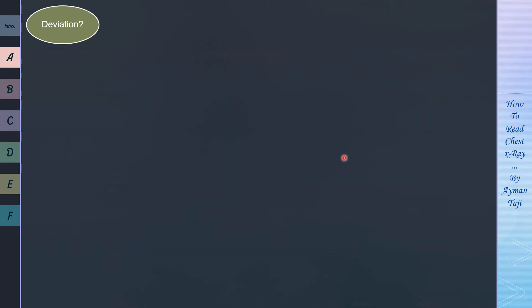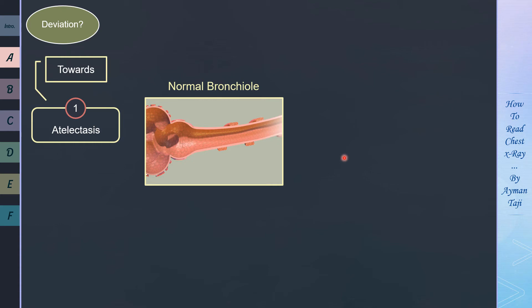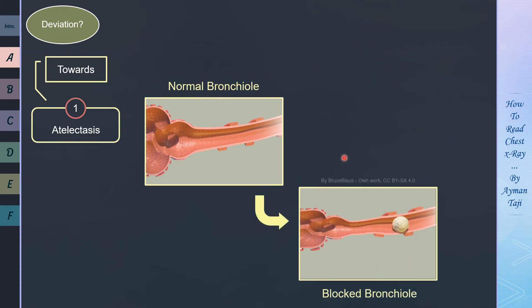On the other hand, some cases will lead to tracheal deviation towards the affected side, and there are many reasons. One of them is atelectasis, which is a loss of lung volume that is caused by a variety of ventilation disorders such as a tumor mass obstructing the airways. So if this is a normal airway, then when it's obstructed by a foreign body or malignancy, the alveoli after the obstruction won't be ventilated and gas here will be reabsorbed, which leads finally to lung collapse.